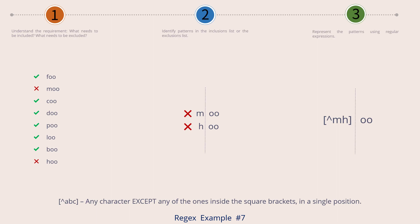By using this regex pattern we have used the exclusion list, represented it with a pattern, and then negated it. In the previous example we started with the same input file but tried to come up with a regex pattern to represent the inclusion list. But we saw it slowly spinning out of control as we had to accommodate around six letters inside the character class — it was getting too verbose. By using this new method, we are making the regular expression more compact and efficient. This also leads us to another important point: there can be more than one solution to a problem.